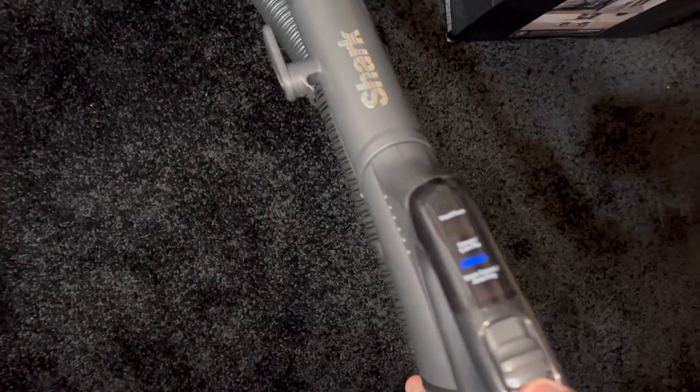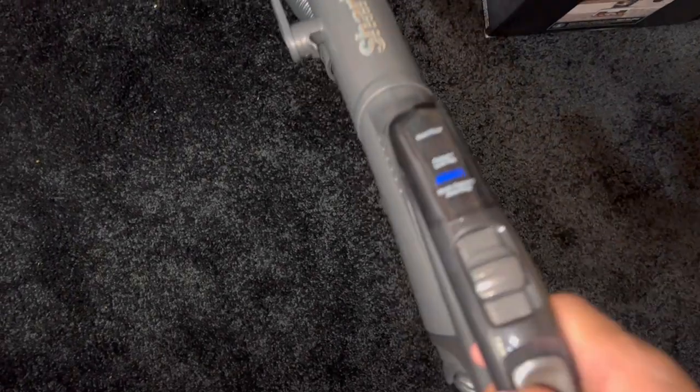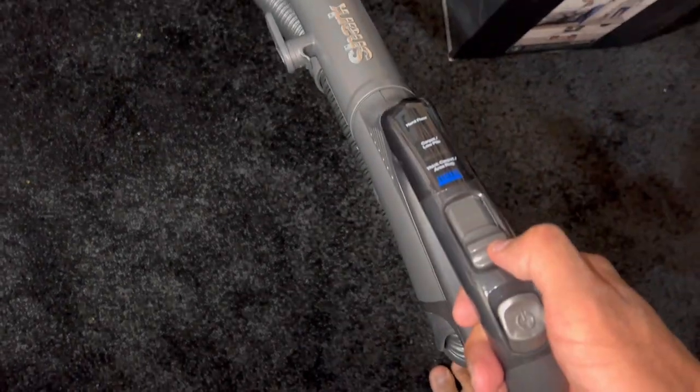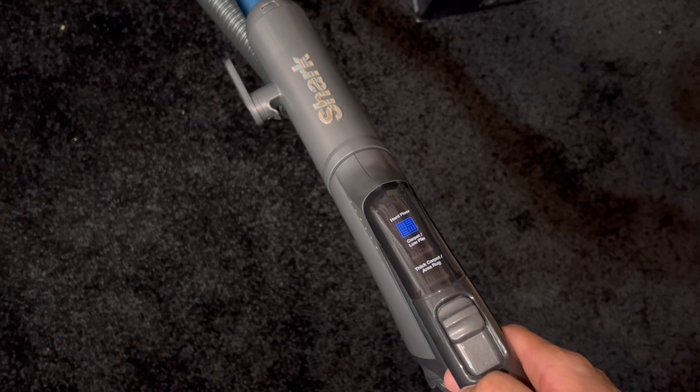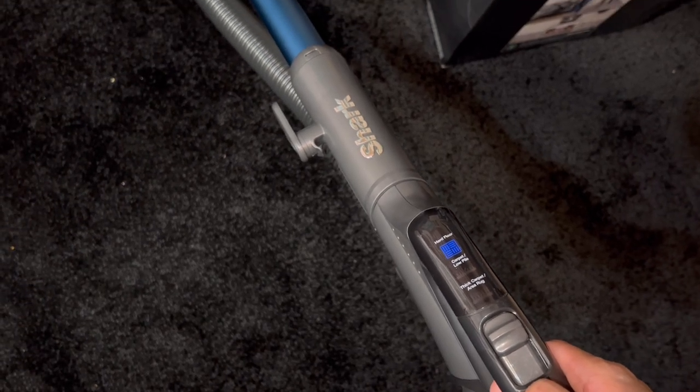You've got a bit of suction leaking out of the vents on the low power carpet setting. However, it's not as significant as the deep power carpet setting. If you select the hard floor setting, you get 100% of the full suction at the cleaner head.